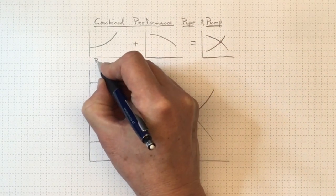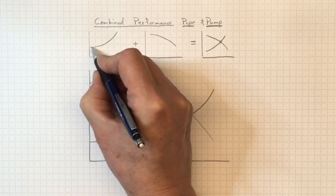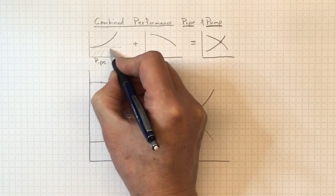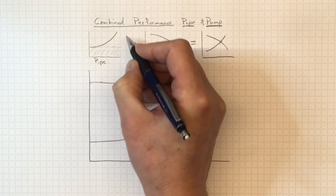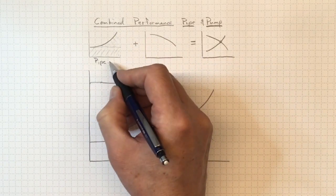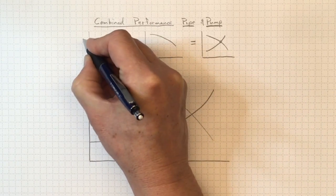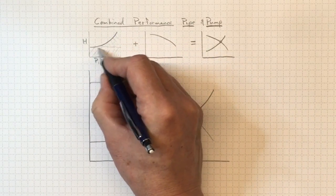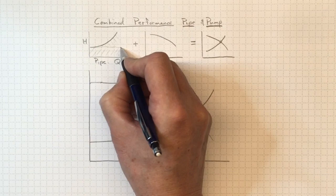The piping system will have a characteristic curve like this. It's got to have some elevation or pressure component that it's overcoming to do useful work, and then there's going to be an additional element of friction that's going to increase with increasing flow rate. So this is the head required to drive a particular amount of flow through a particular arrangement of piping.